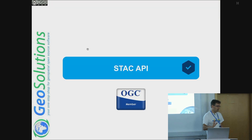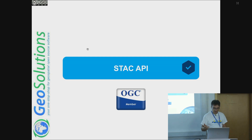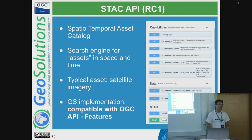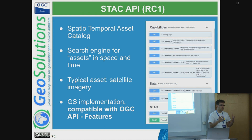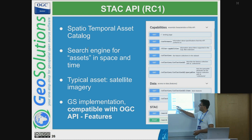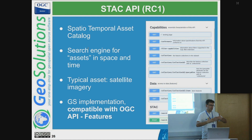STAC API is another API that GeoServer implements, with a finalized specification or near-RC status. STAC is a SpatioTemporal Asset Catalog. It allows you to search for remote sensing satellite imagery — really anything located in space and time that can be downloaded as files is a good candidate. STAC API can be implemented as compatible with OGC API Features, so you can have an API compliant with both, and that is how it is done in GeoServer.